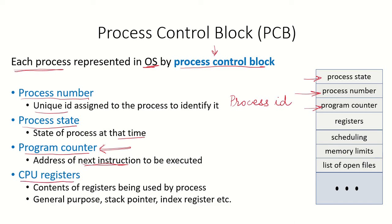The contents of the CPU registers are also maintained here. The process might be using many general purpose or special purpose registers. So the contents of the registers being used by the process — like the general purpose registers, the stack pointer, the index register — all of this information is also stored. The contents of these registers are available in the PCB.